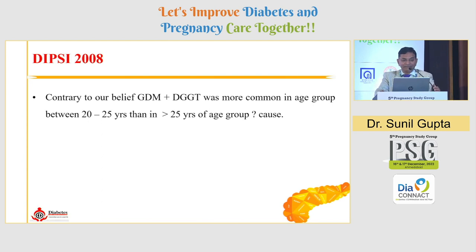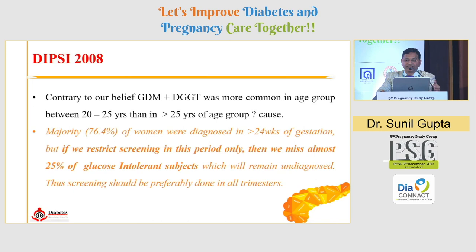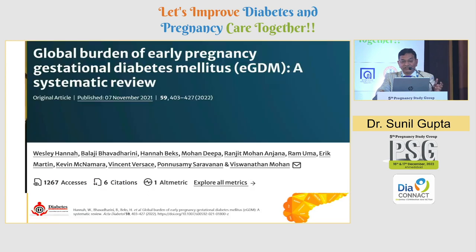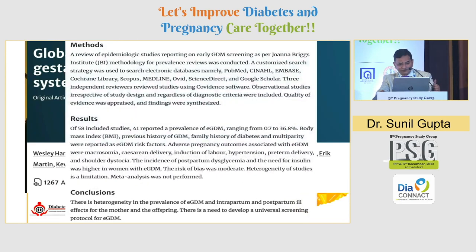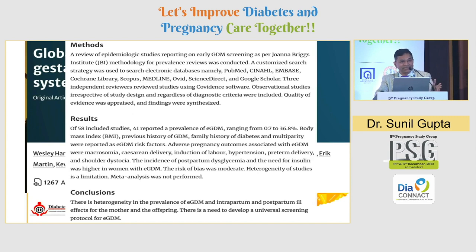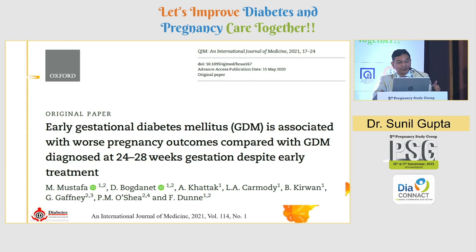Contrary to our belief, GDM and borderline cases of 120 to 140 were more common in younger age. The majority — around 76% — were diagnosed after 24 weeks, but in other data around 25% were diagnosed before 24 weeks. A compilation of around 58 studies shows the prevalence varies drastically from 1% to almost 37%. Indian data says 40% are diagnosed below 24 weeks, and our own data shows 17 to 18% are diagnosed before 12 weeks of pregnancy.